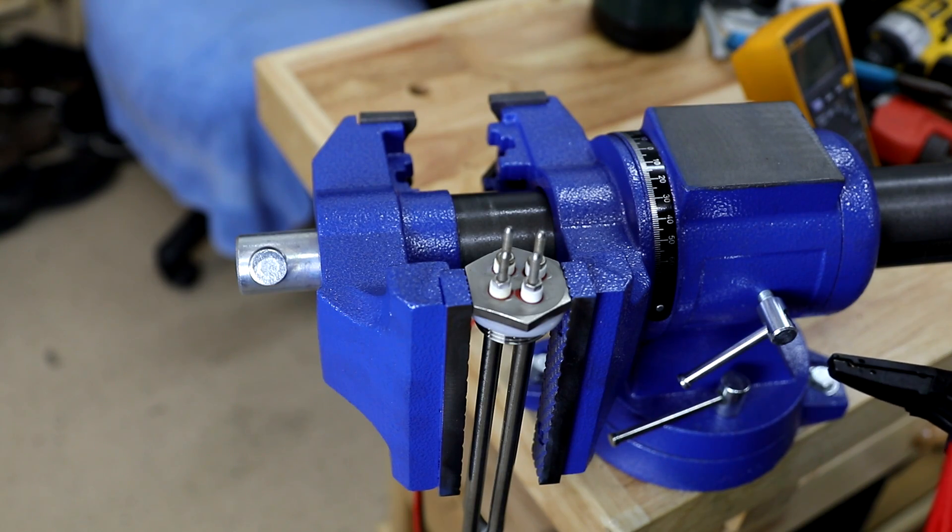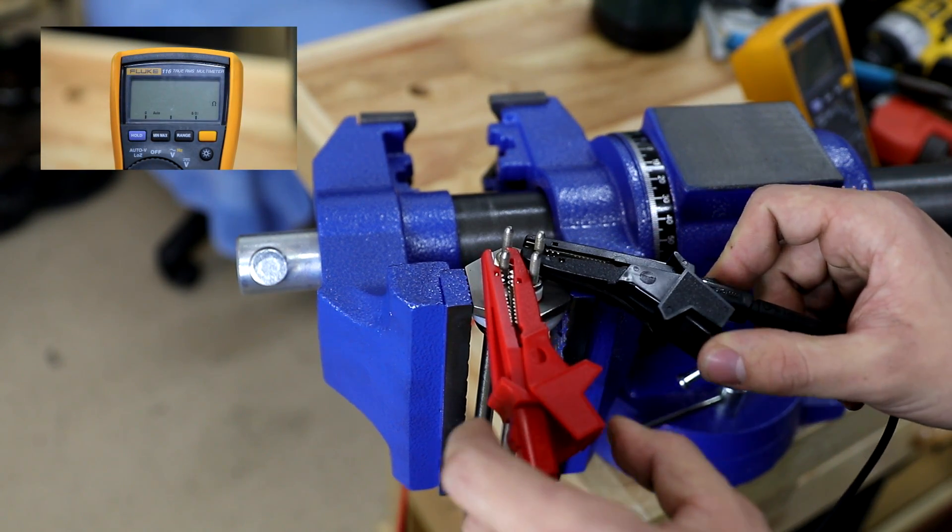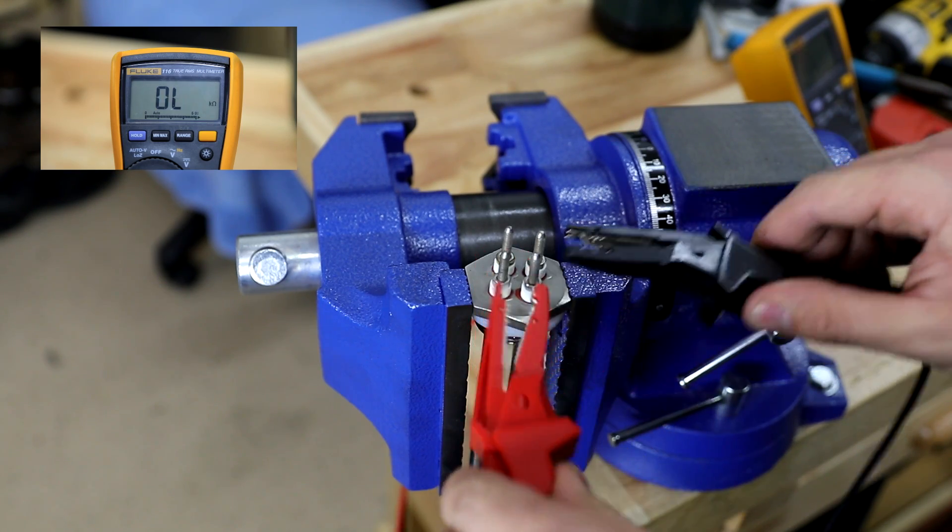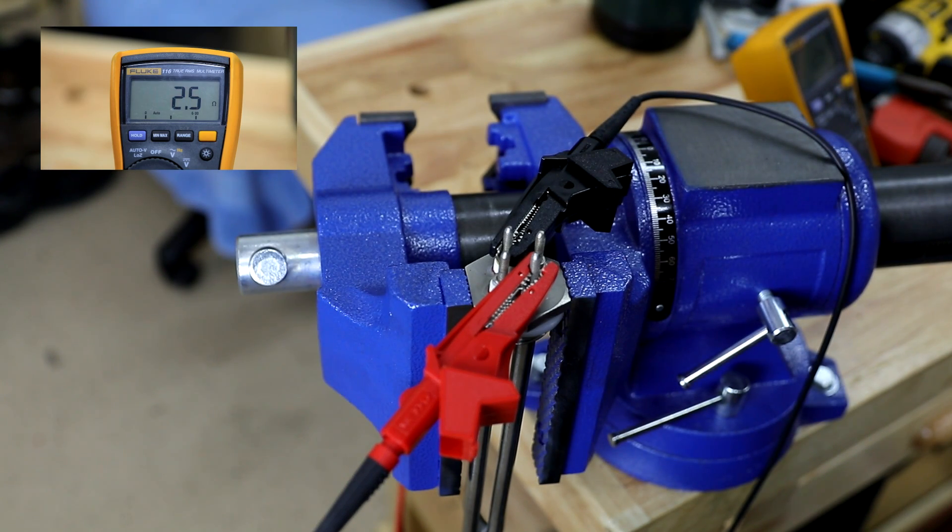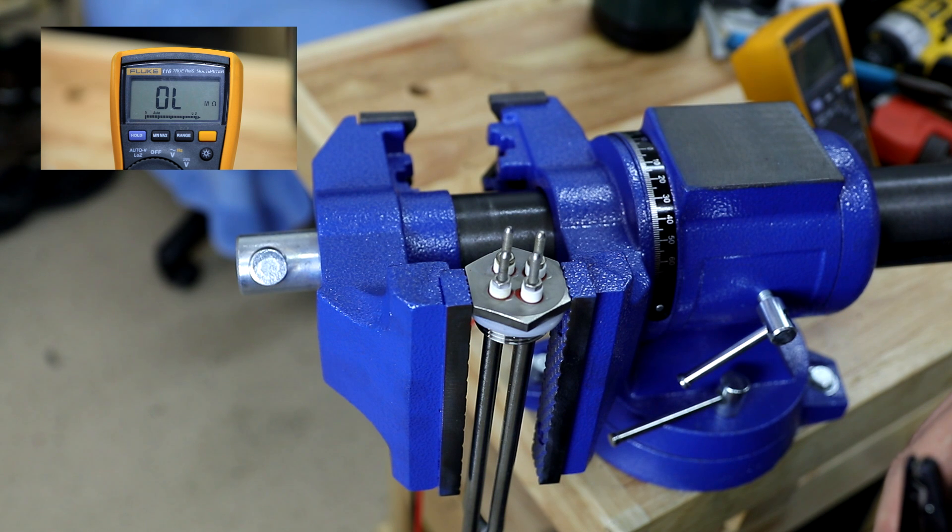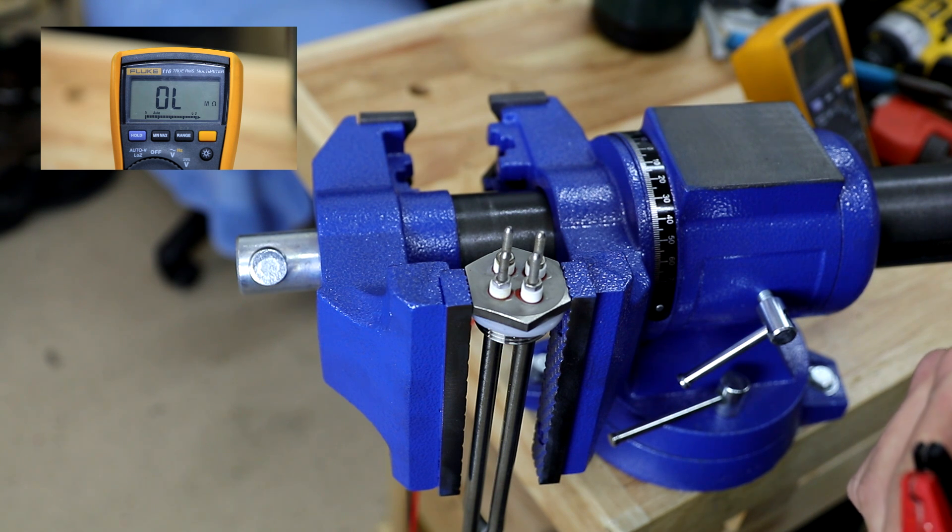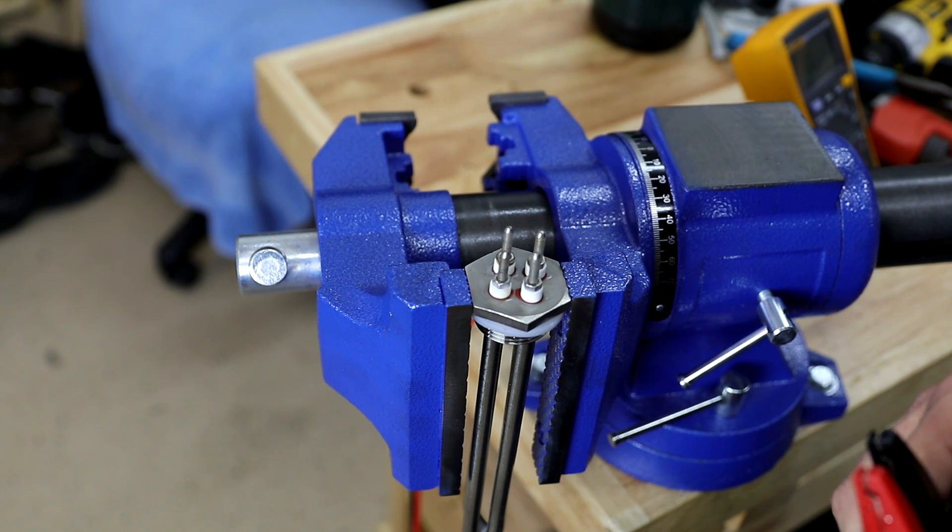So I've pulled the heating element out of the contraption that I've built and I'm gonna go ahead and probe across the first element because this is actually two elements and I have 2.5 ohms. If I probe across the second element I have 2.5 ohms which means we can configure this in three different ways. We can configure it for approximately 1.2 ohms or we can also configure it in series for 5 ohms or we can use just one element for that 2.4 to 2.5 ohms that we just measured.